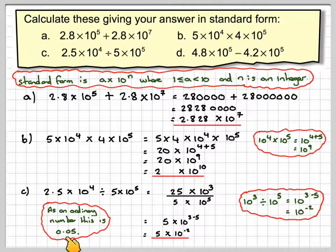As an ordinary number, this is 0.05. So you move the decimal point 2 places that way because it says minus 2.